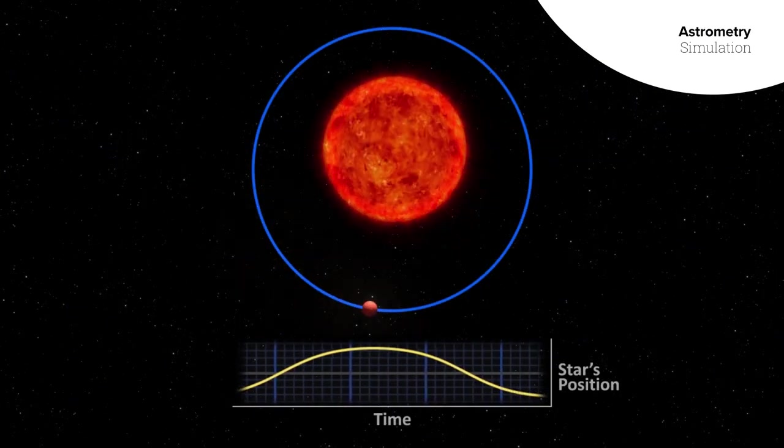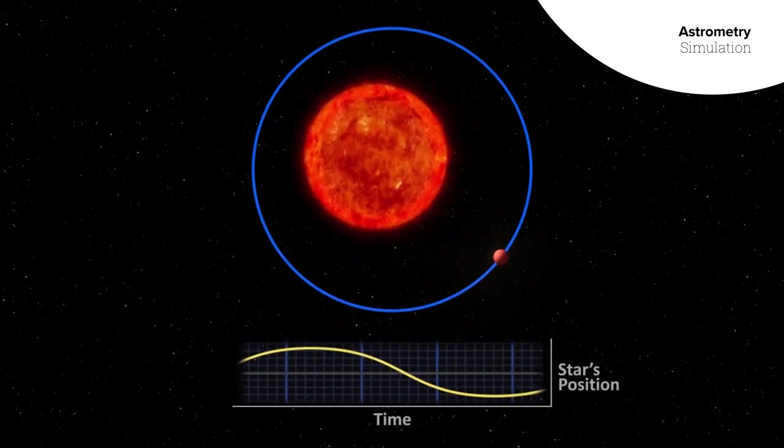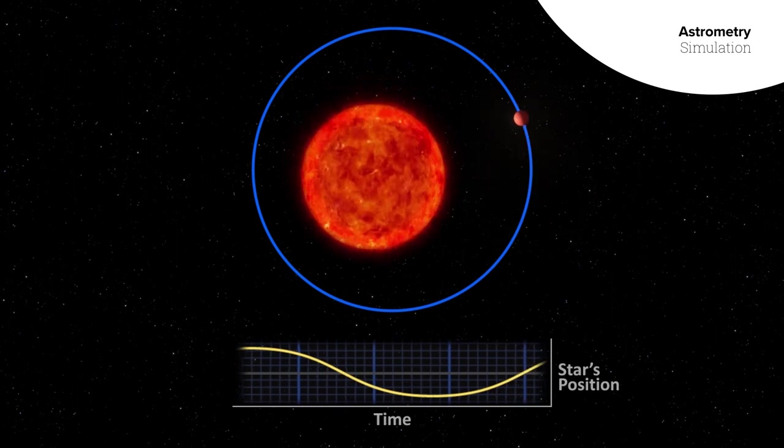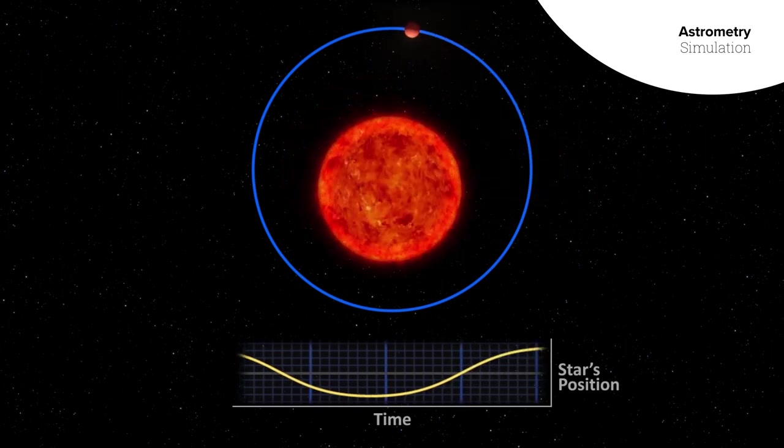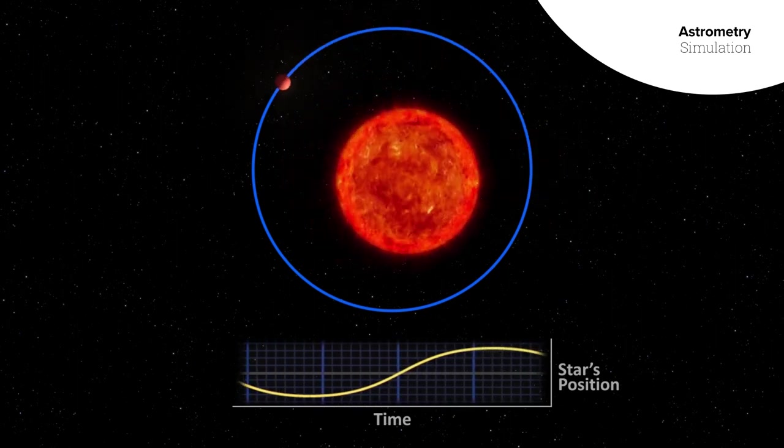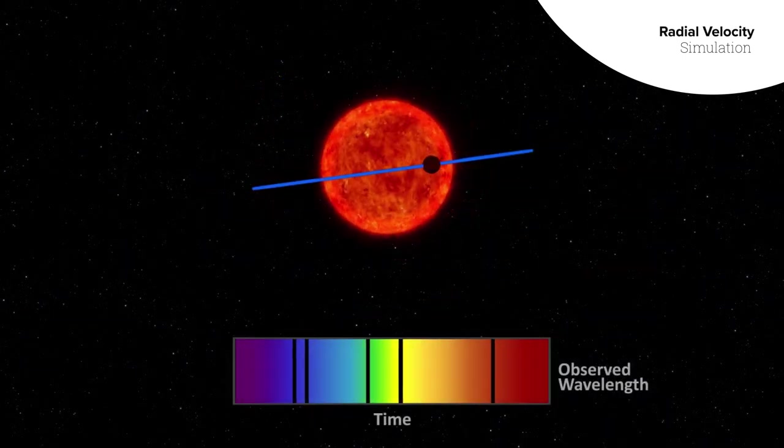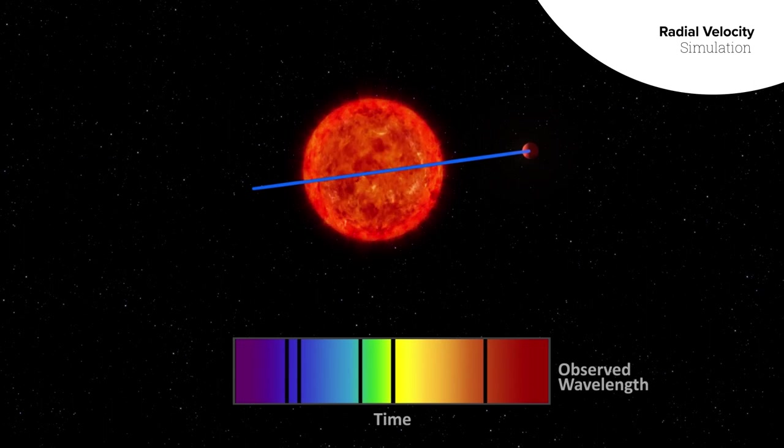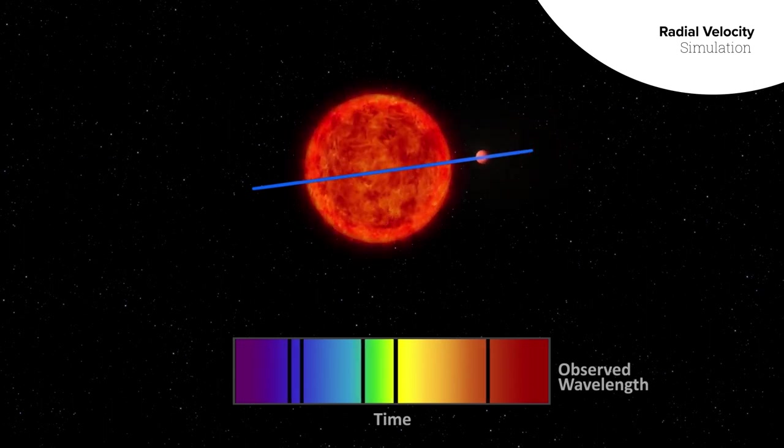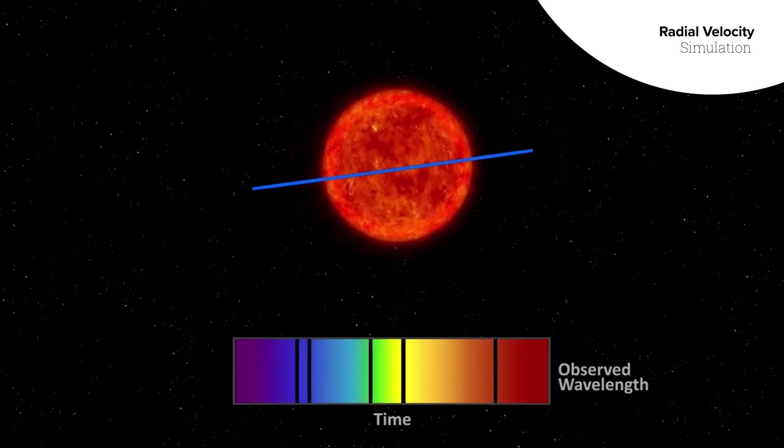Another technique observes very small changes in the star's position in the sky, the wobble that occurs when an unseen planet's gravity tugs on its host star. If the planet and star are oriented so that the star is moving toward or away from us, instead of side to side, we can detect the planet as a shift in the star's light.